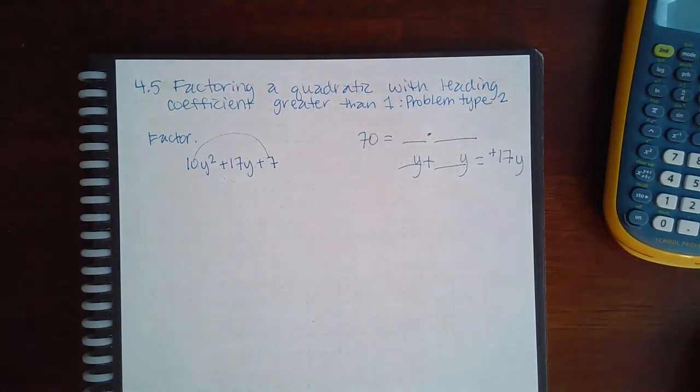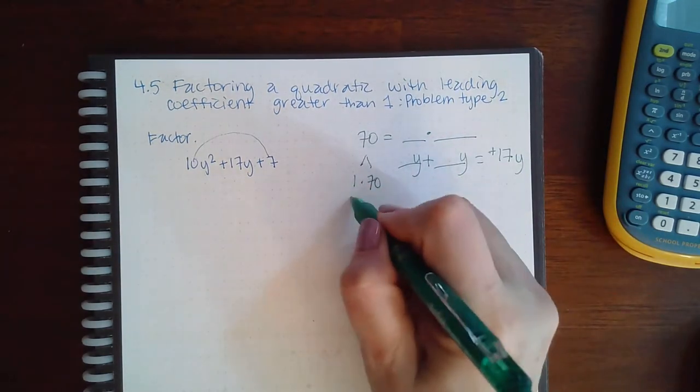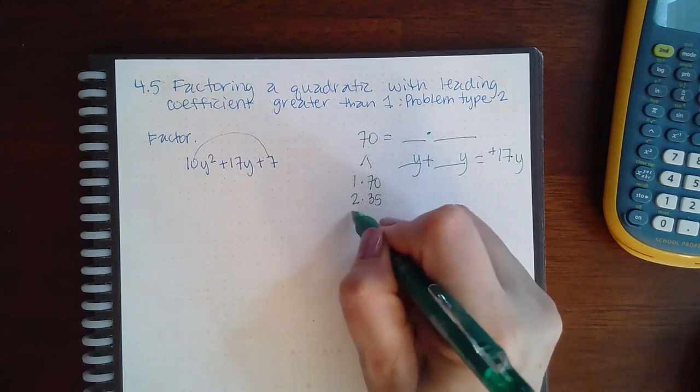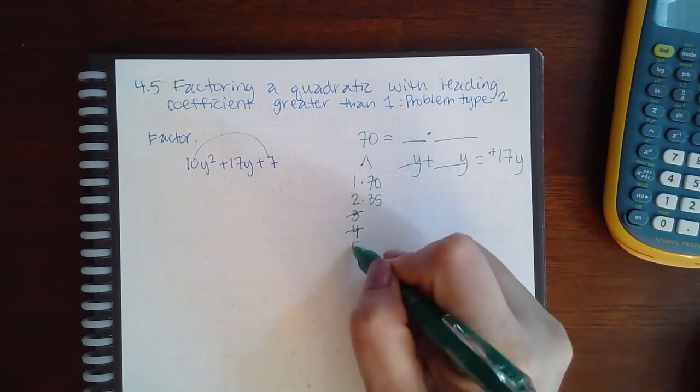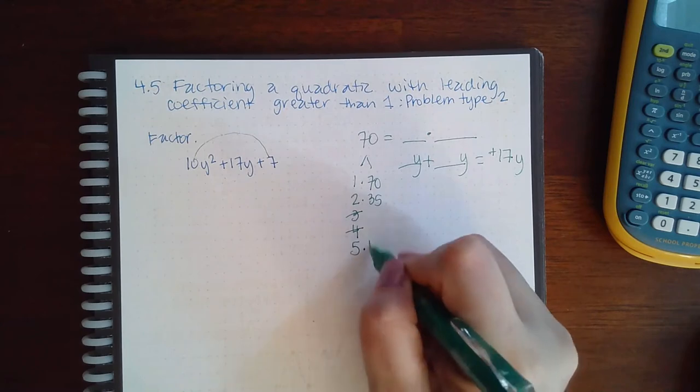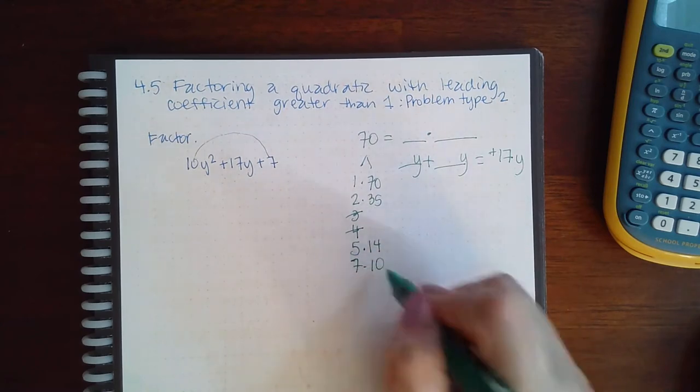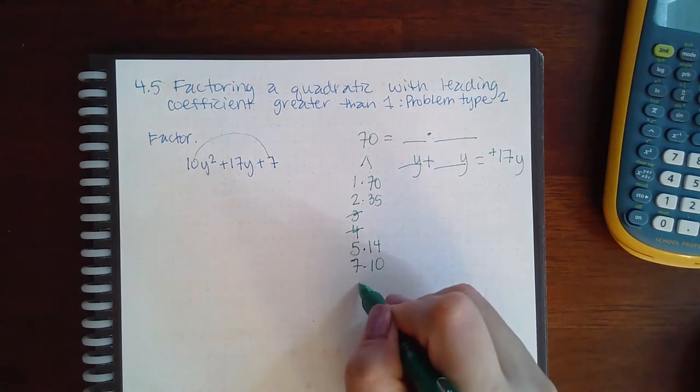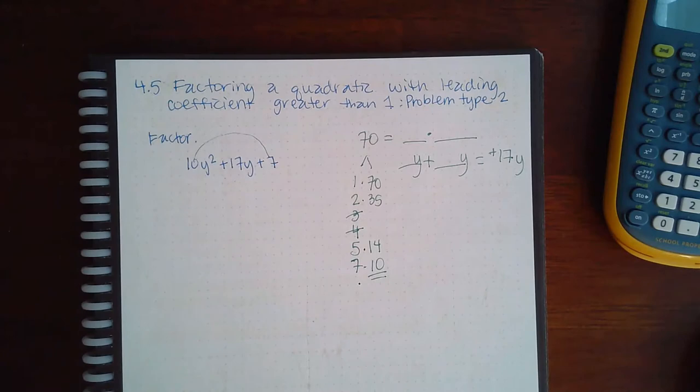And so then I know these are going to both have y's, right? We just need to figure out the numbers. So break up the 70: 70 is 1 times 70, 2 times 35, 3 does not go in, 4 does not go in, 5 is 14, 6 no, 7 does, 8 no, 9 no, and 10 is already on the list. So we've already got all of the factors.